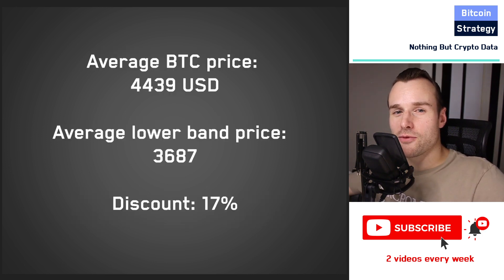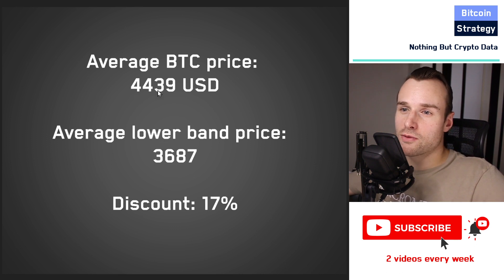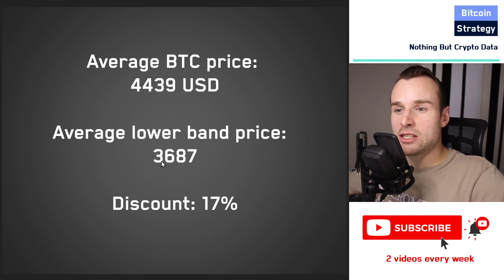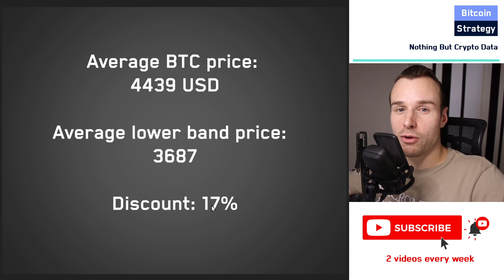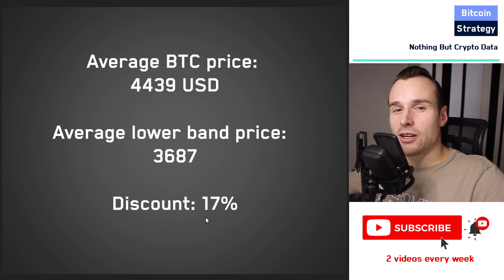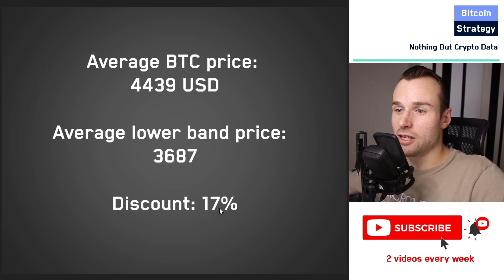Here's the result. The average Bitcoin price in the whole data set was $4,439, covering around 10 years of history. The average price when below the lower Bollinger Band was $3,687. So on average, if we only bought when the price was below the lower Bollinger Band, we would have gotten a discount of around 17%. On the first glance it does look like dollar cost averaging only on those days gives us cheaper prices and more Bitcoin for the dollars invested — but there's more to it.